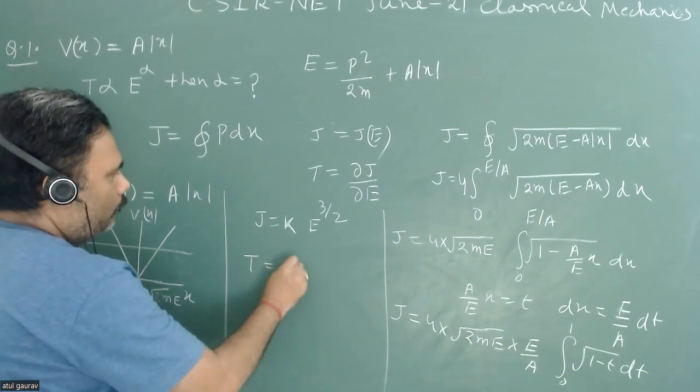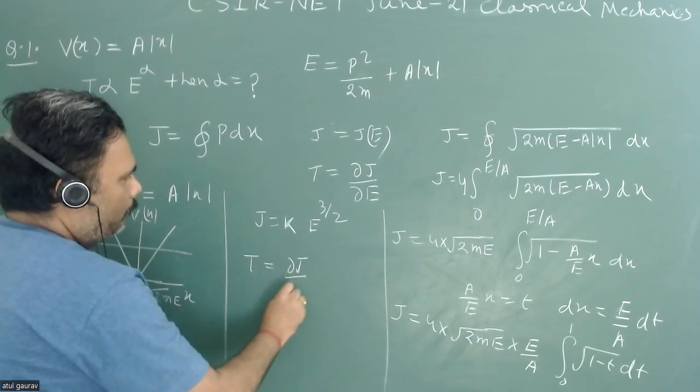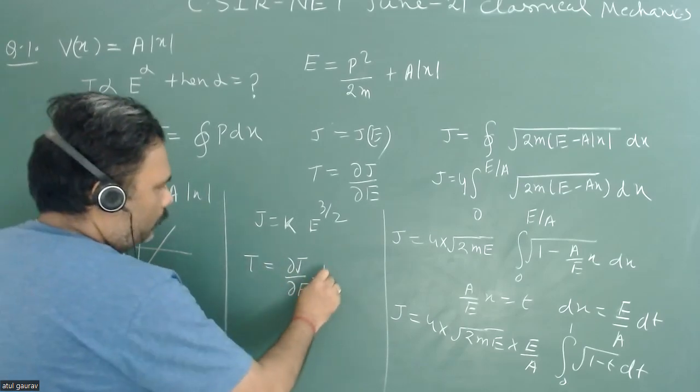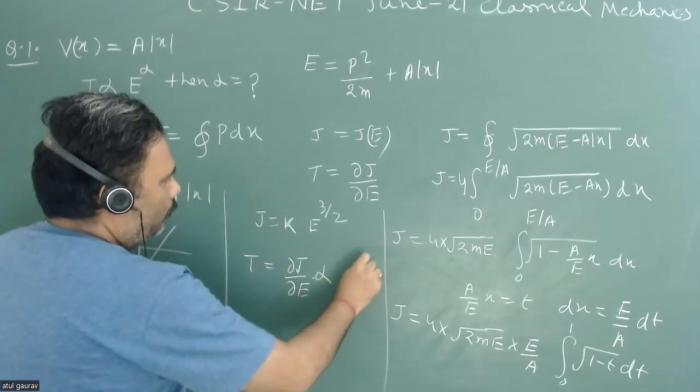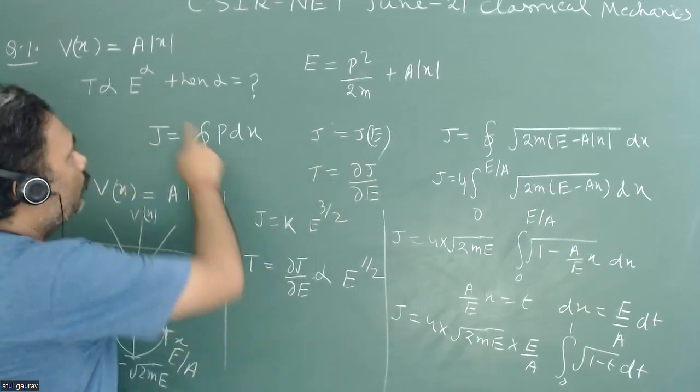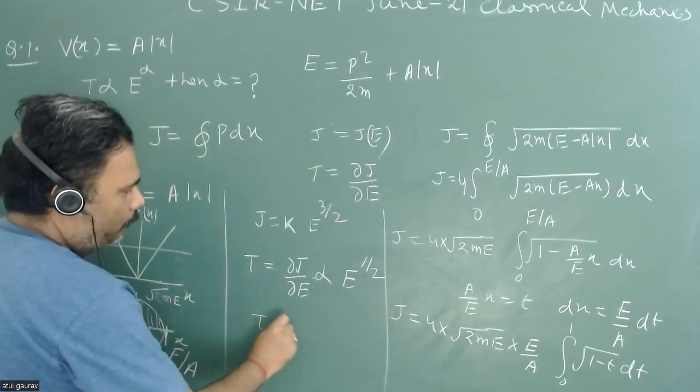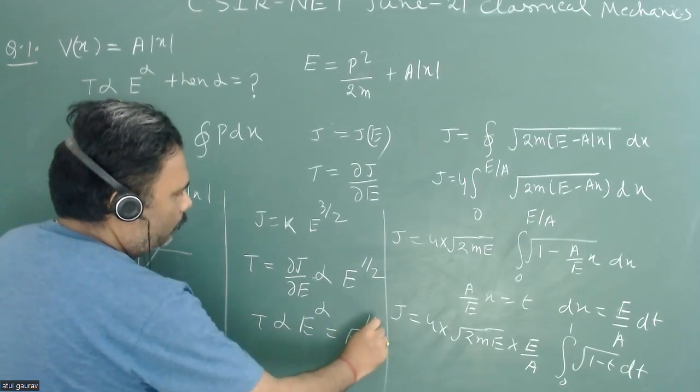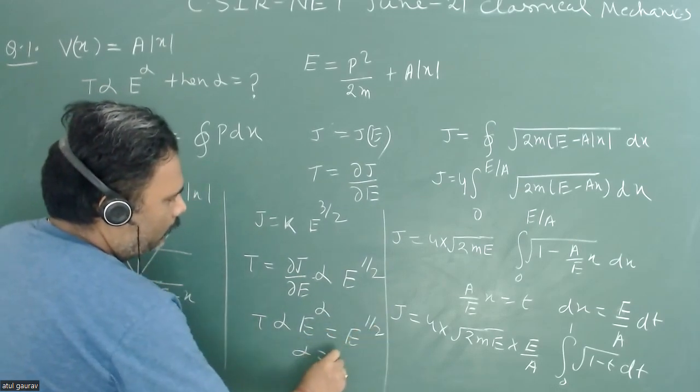Then time period equals del J upon del E, and this value is proportional to E to the power half. So from here, time period is proportional to E to the power alpha equals E to the power half. So alpha equals half.